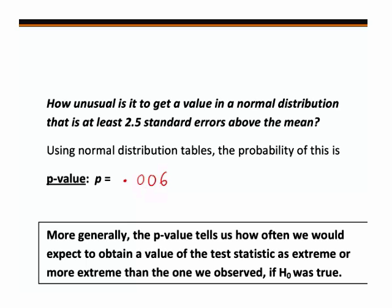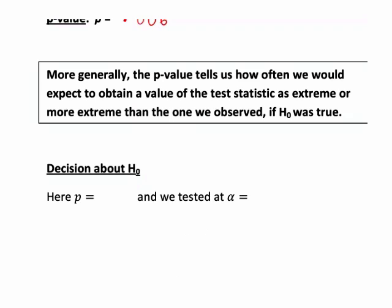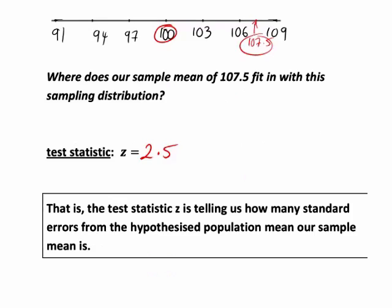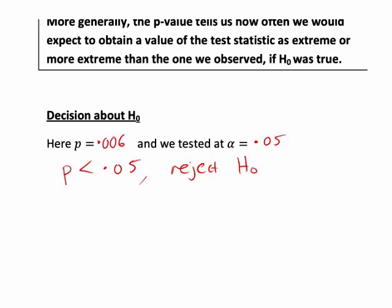The lower the probability value, the less it's suggesting our sample fits in with what we'd see if H0 was true. So we finally compare our p-value with the significance level to decide whether we have enough evidence to reject H0. In this case p was 0.006 and we tested at alpha equals 0.05, so our p-value is less than the significance level. We therefore have enough evidence to reject H0 — that is, we have enough evidence to conclude that university students really do have a higher average IQ than the general adult population, and that the observed difference is more than we could reasonably attribute to sampling variability.